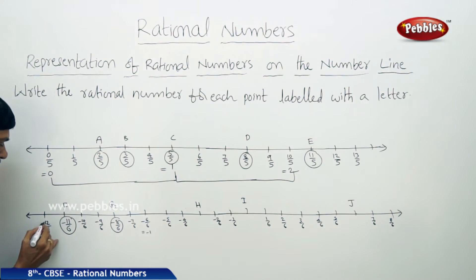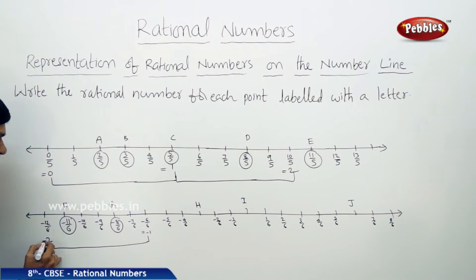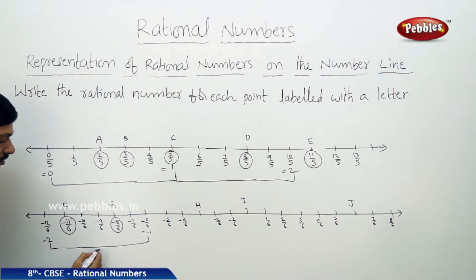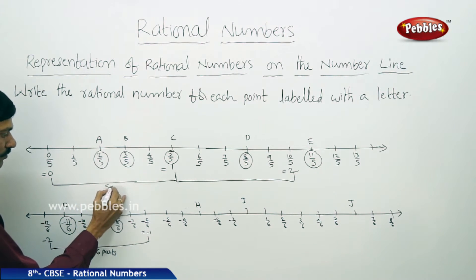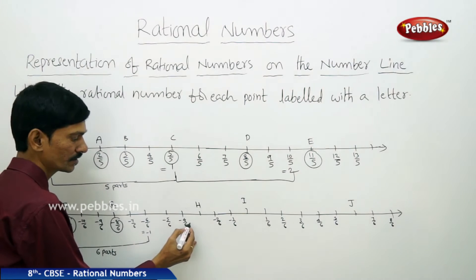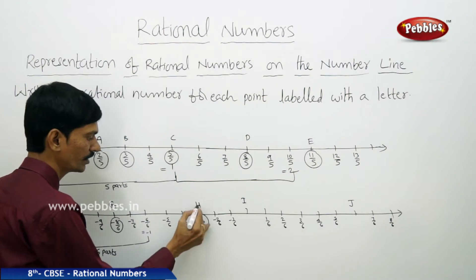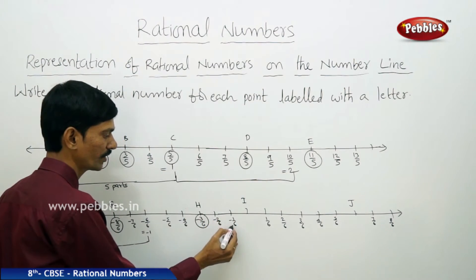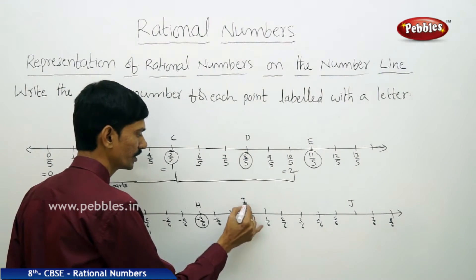From minus 2 to minus 1, this is one unit divided into 6 equal parts — 1, 2, 3, 4, 5, 6. Then minus 5 by 6, minus 4 by 6, and minus 3 by 6 — represented by H. Then minus 2 by 6, minus 1 by 6, and 0 by 6 which is nothing but 0 — represented by I.